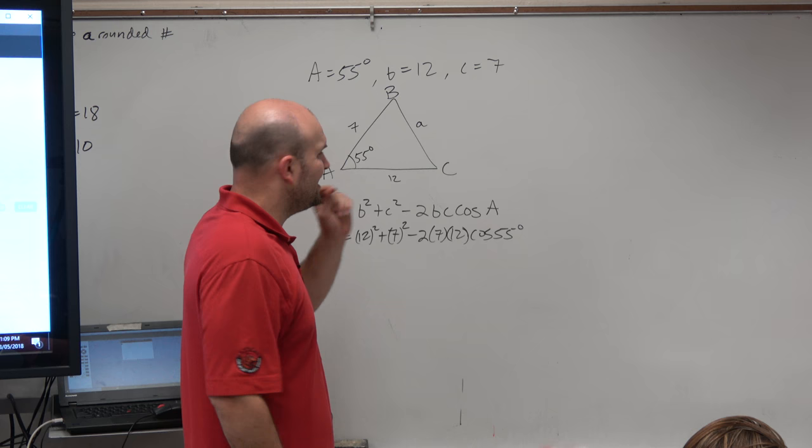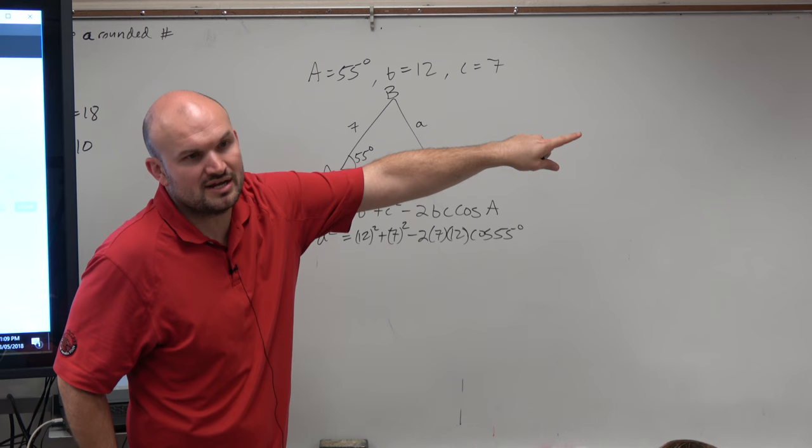And usually, the kind of hint is, whatever your angle is, that's the formula you use. So since I have A, I'm going to use the one with cosine of A. And it gives b equals. Exactly.